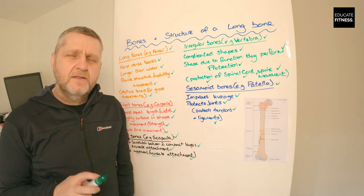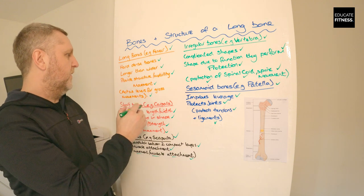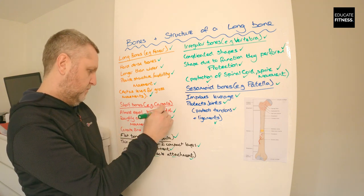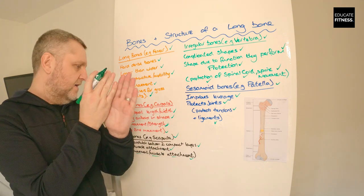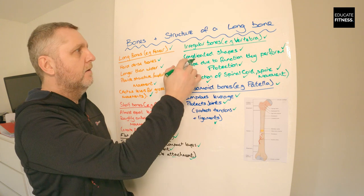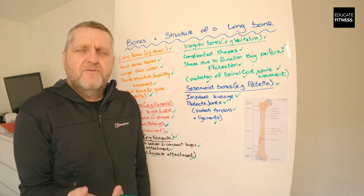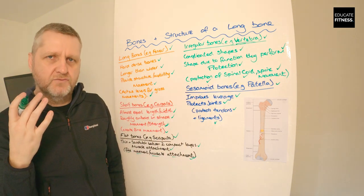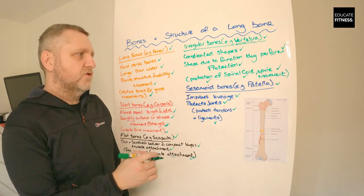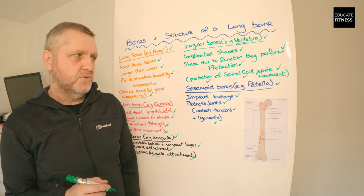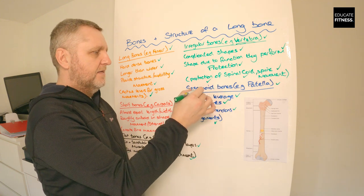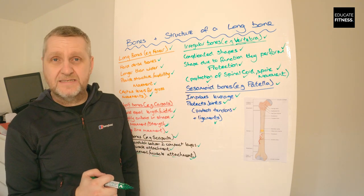To recap, there are five classifications of bones. Long bones act as levers for gross movement. Short bones create fine movement. Flat bones provide a large surface for muscle attachment. Irregular bones — think of the vertebra — are complicated in shape, with the main function being protection of the spinal cord and also movement. And finally, sesamoid bones are all about leverage; they protect joints, ligaments, and tendons.